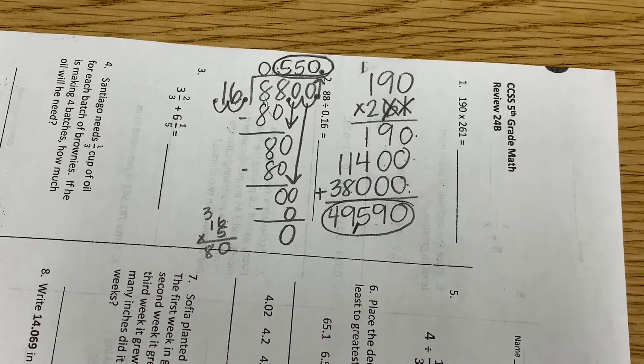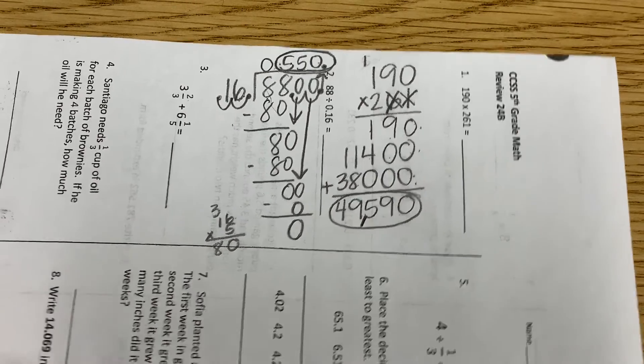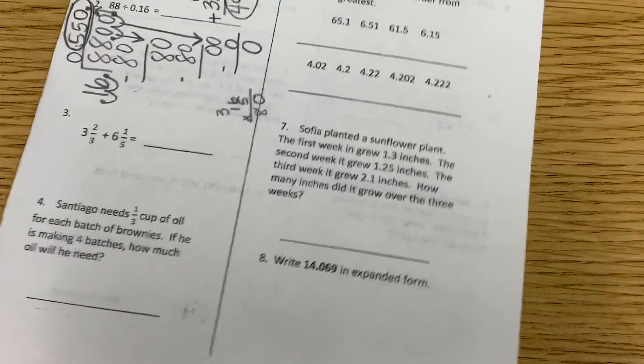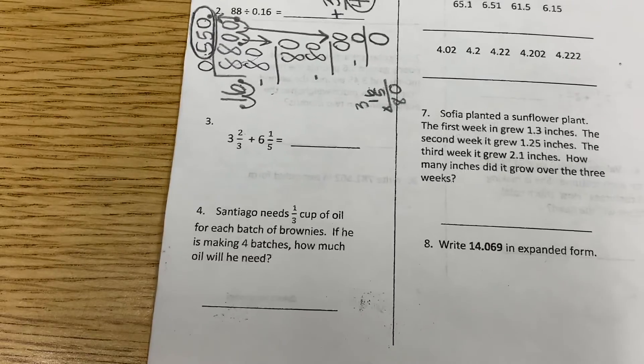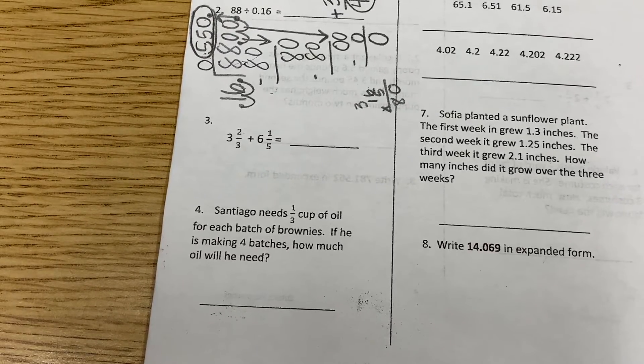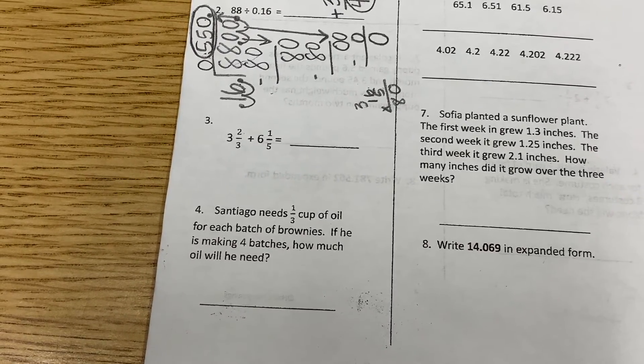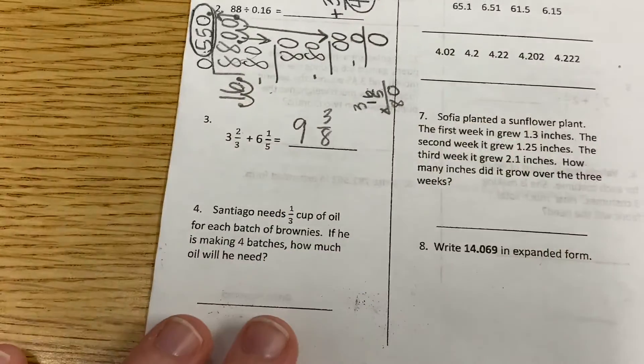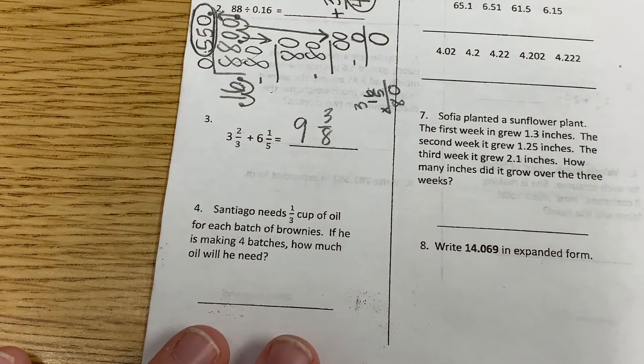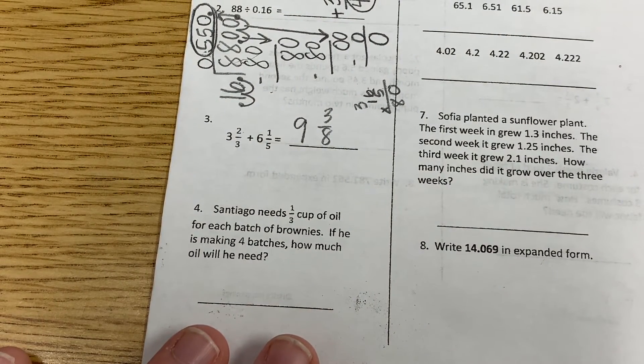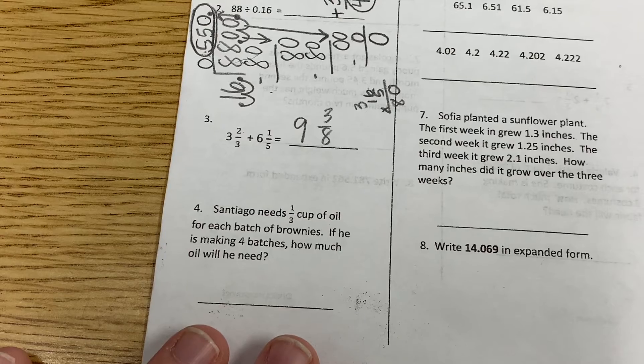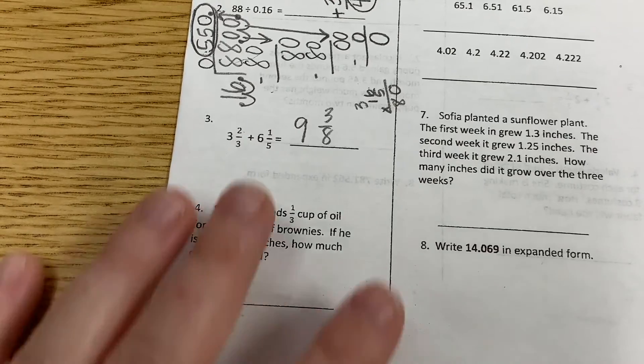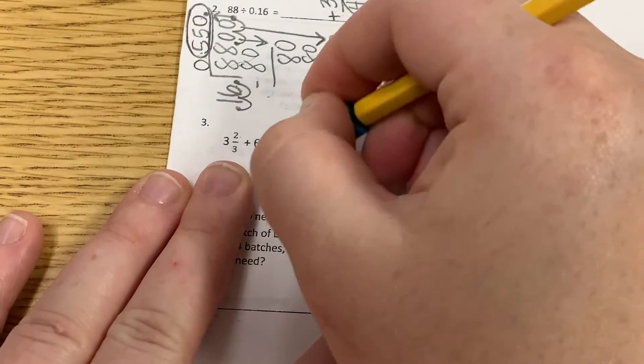We got it? Okay. So now I'm going to turn it back. And we are looking at number 3. It says 3 and 2 thirds plus 6 and 1 fifth. Ooh I got this answer Ms. Snead. Done. No. Why not? It's wrong. It's wrong? You need to find a common denominator. Oh, I need to find a common denominator.